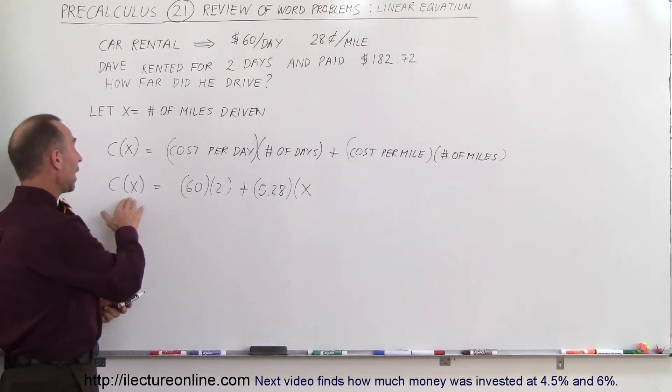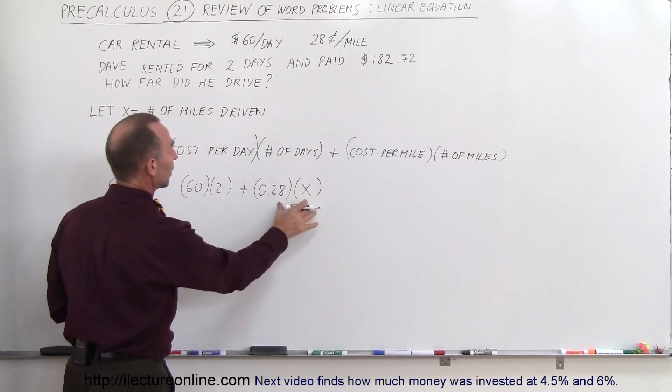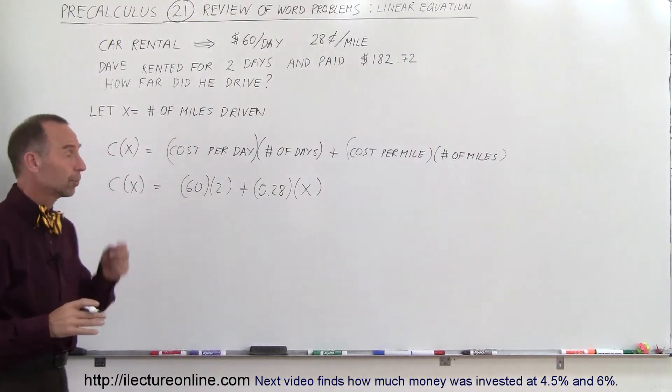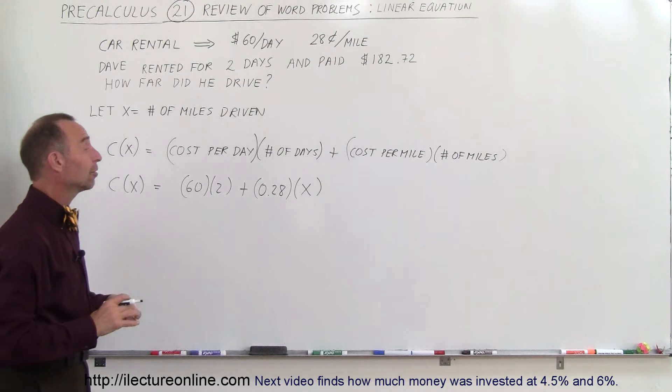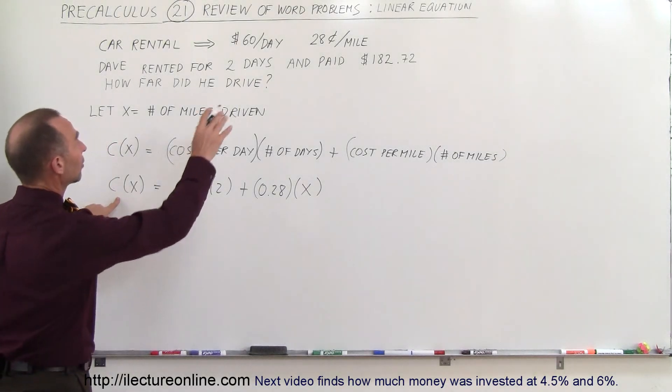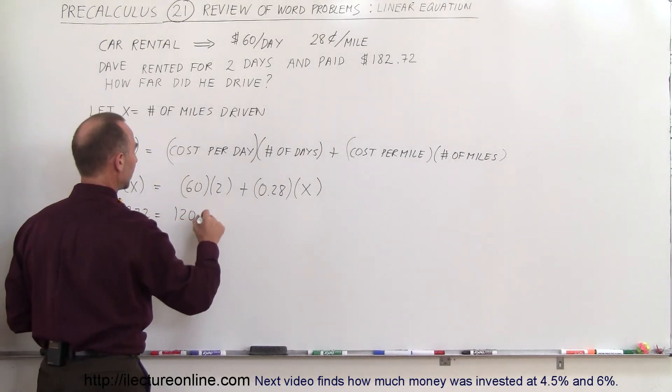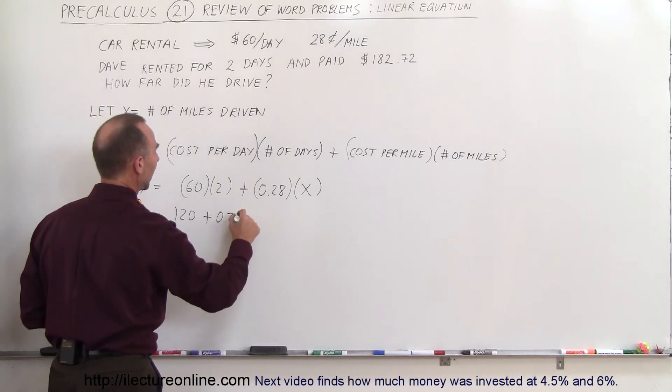It's a linear equation. It's Y equals MX plus B. And so this would be our intercept and that would be the slope times the variable X. Alright, since you know what the cost is, the cost is $182.72. That is equal to 120 plus 0.28X.